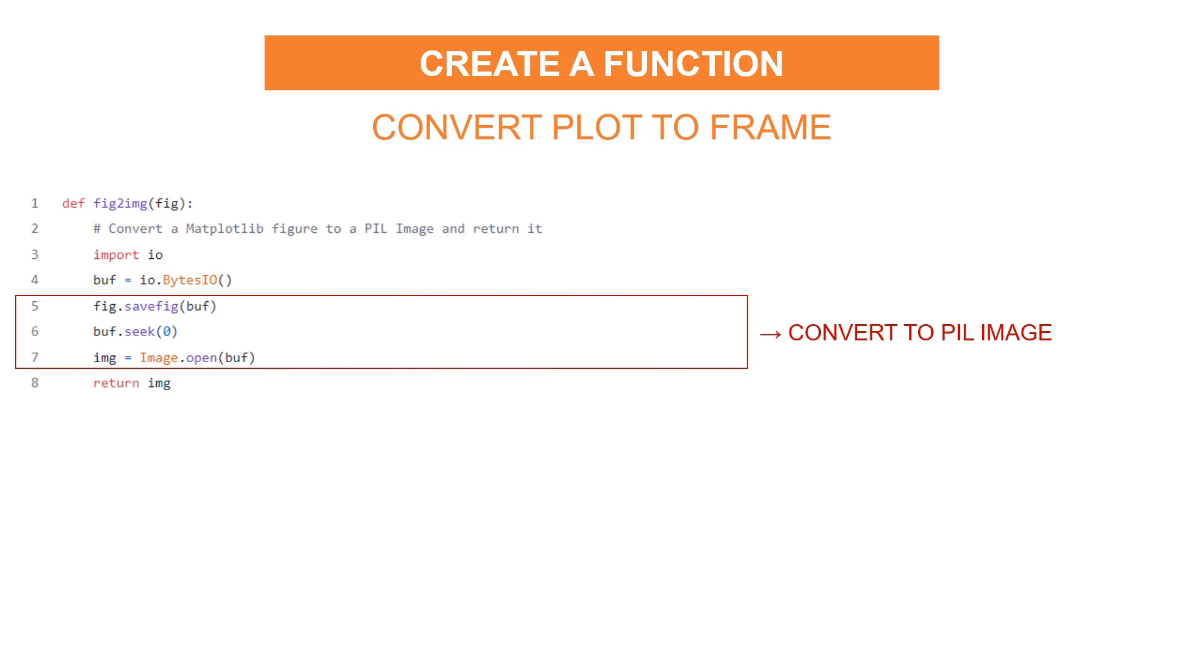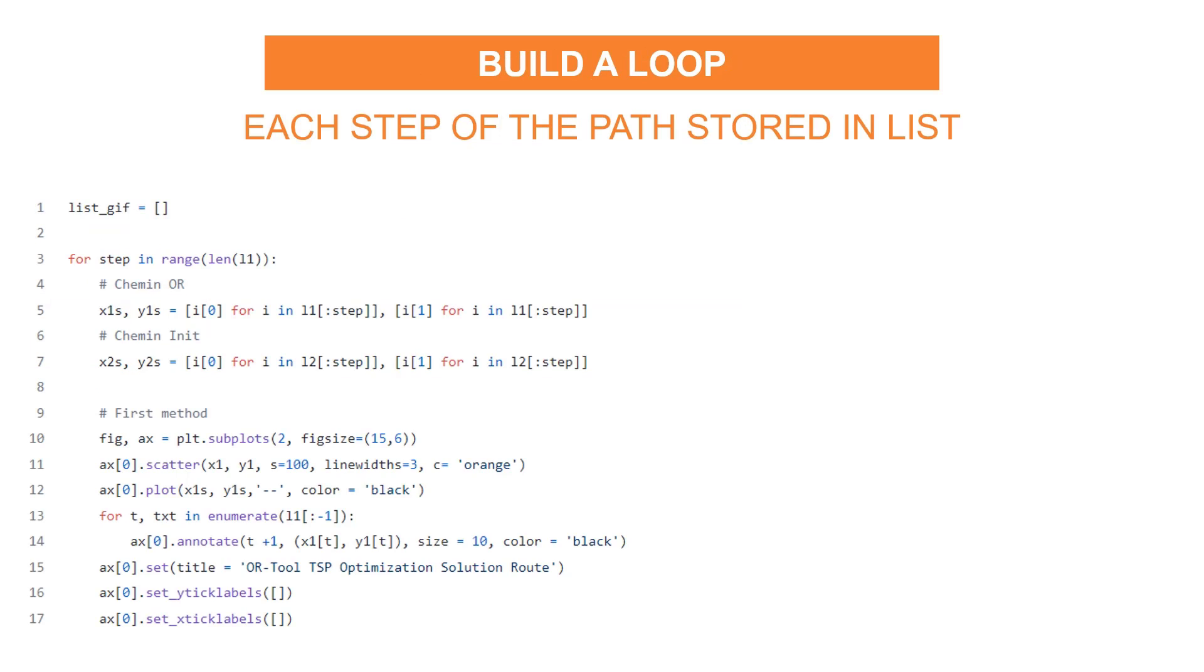First, we need a function to save these intermediate plots in a format that can be read by Pillow. This function is using the library IO that will take a Matplotlib figure as an input and return a Pillow object. So now, we can convert any Matplotlib figure to a Pillow object. The next step is to generate all these intermediate graphs, transform them into Pillow objects, store them in a list and create GIF.